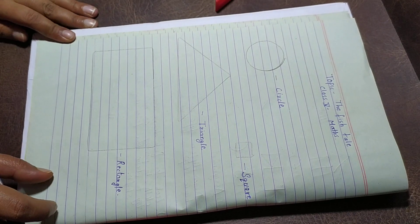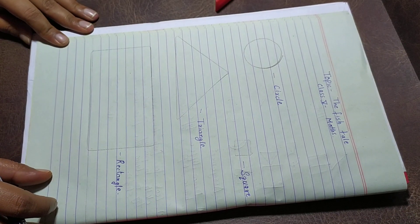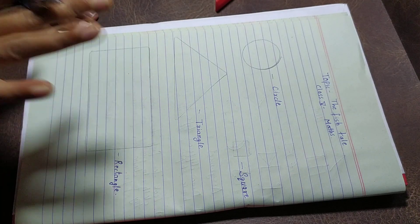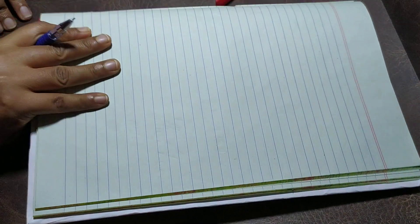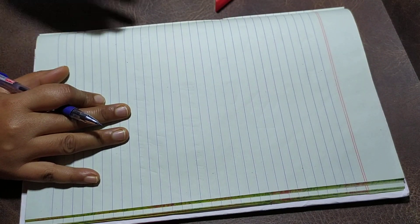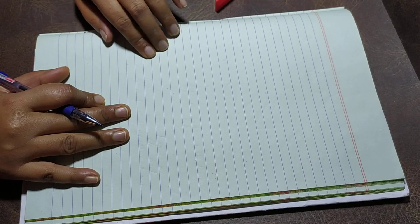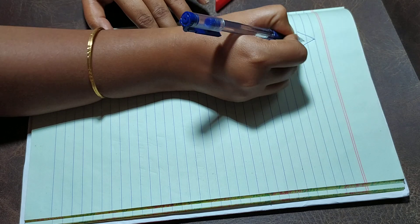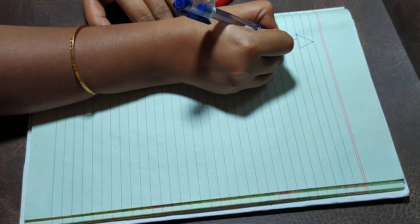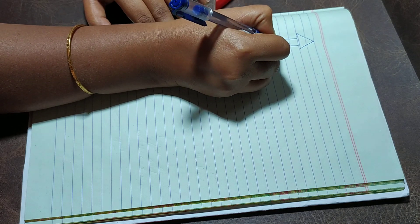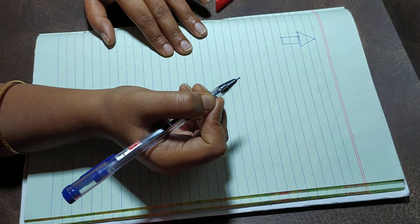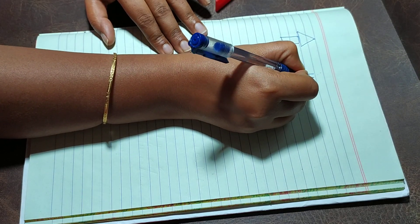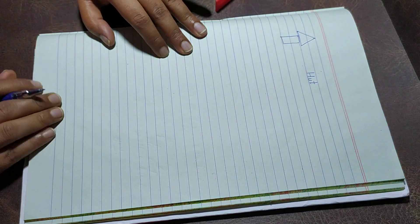Now our next task is to make different shapes using these basic shapes. Let's start. I pick a shape like triangle and this is rectangle. Can you tell me what is this? Yes, this is a hut.